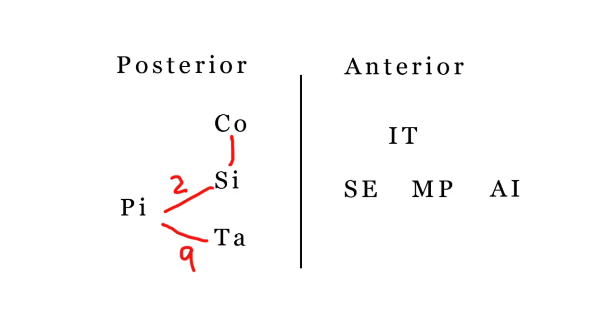The internal thoracic gives rise to the superior epigastric and the musculophrenic, and the internal thoracic gives off six branches to the anterior intercostal, and the musculophrenic gives off five branches.